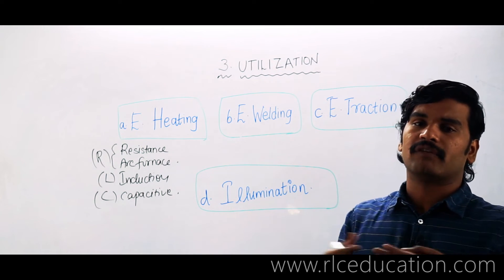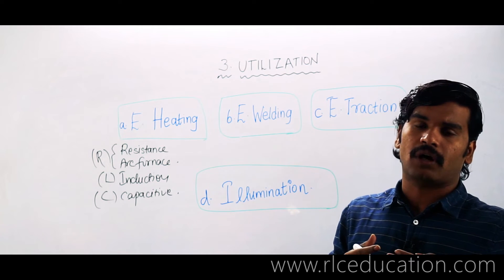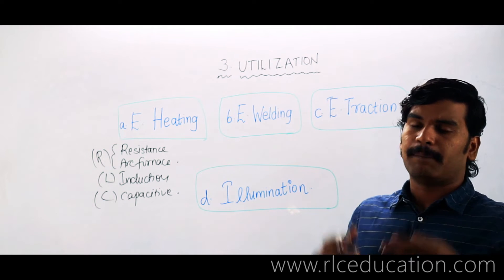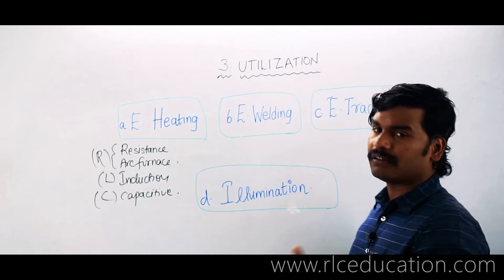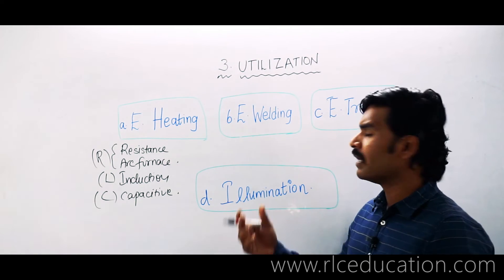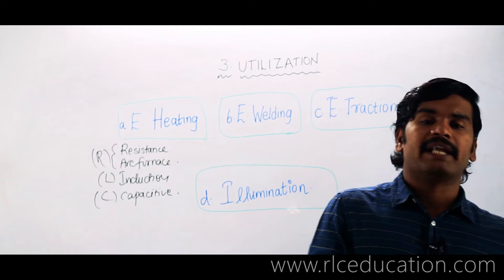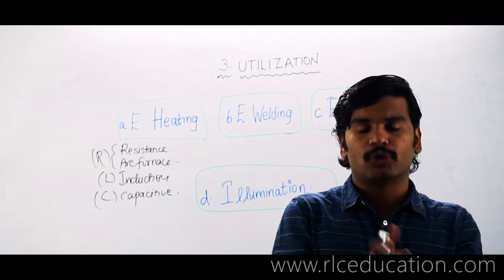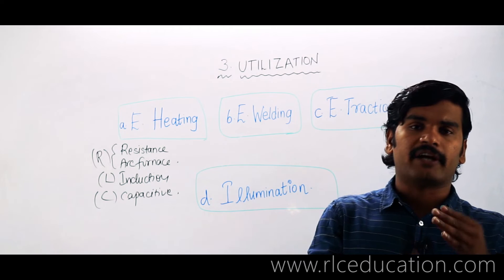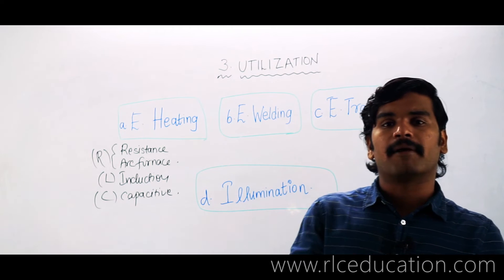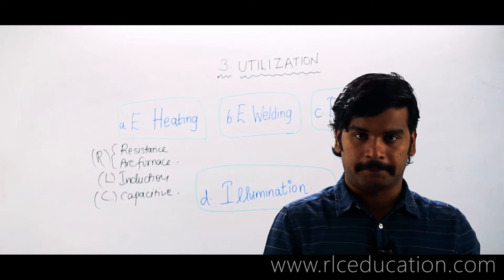Electric welding is a process of joining two metals together or depositing a new metal into a worn-out metal. Earlier there were mechanical and chemical ways of joining metals, but as technology developed, various wonderful techniques of welding emerged.